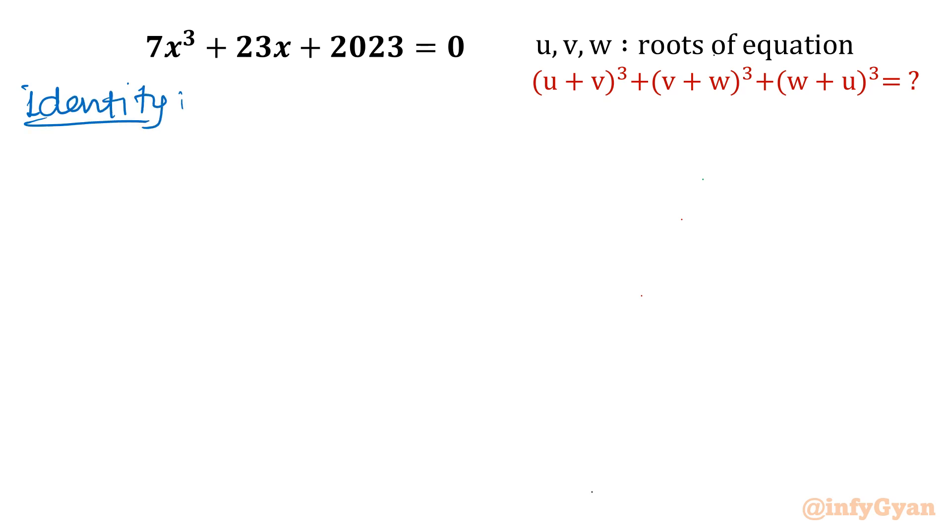So identity. That identity is: a³ + b³ + c³ = (a + b + c)(a² + b² + c² - ab - bc - ca) + 3abc. This is we know.